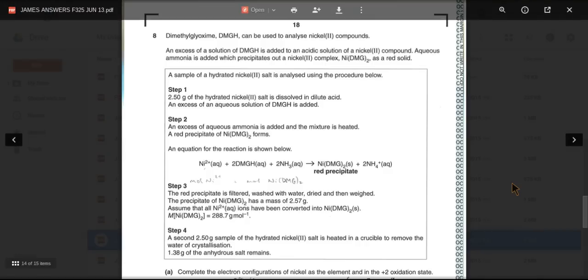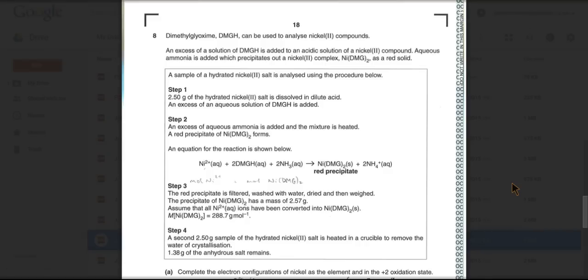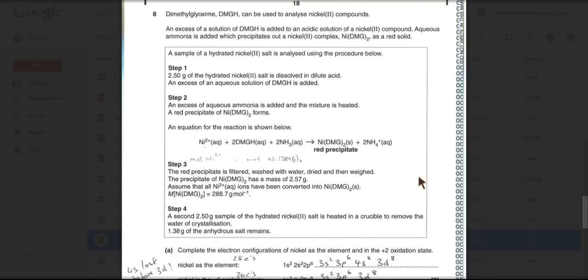For question 8, I'm going to split it in half and I'll do the calculation second. So question 8 is based on transition metals and you're given lots of information to process. I'll go through that in the second half.